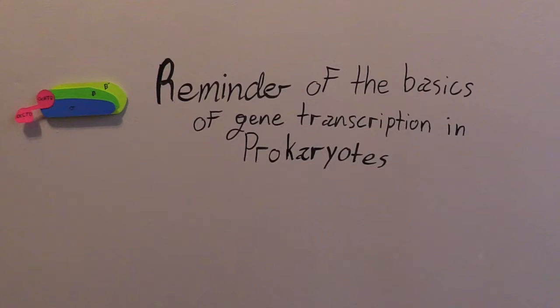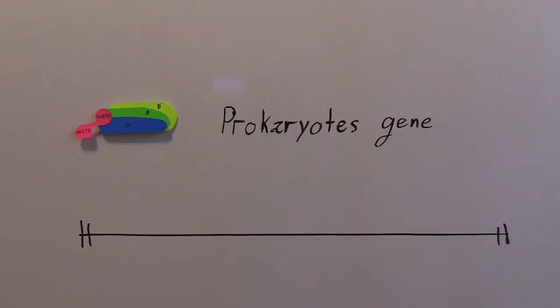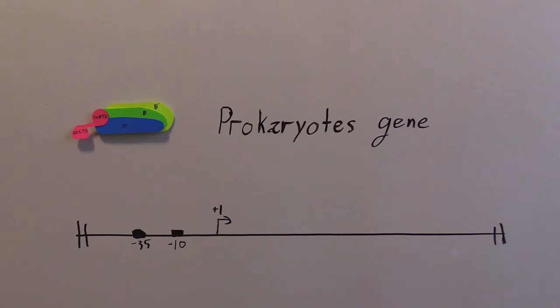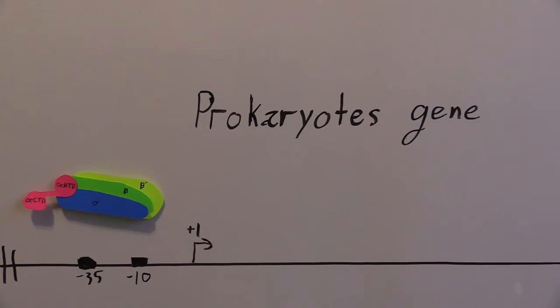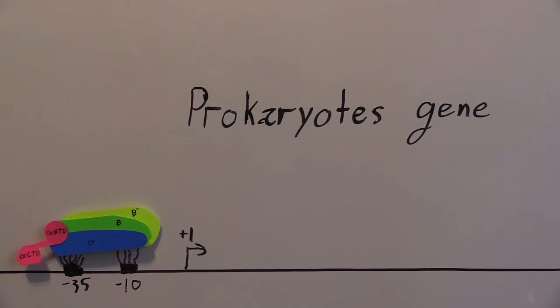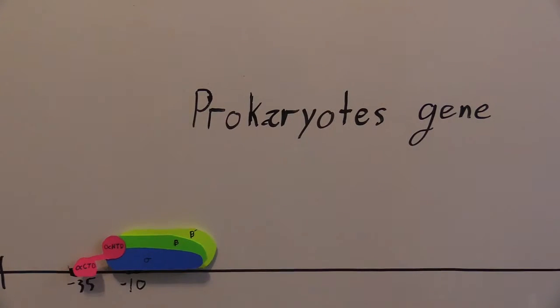When it comes to gene transcription in prokaryotes, remember there's the negative 10 and negative 35 sites upstream of the plus one site, or the open reading frame. RNA polymerase is going to come in, bind to these sites, and then transcription will occur.